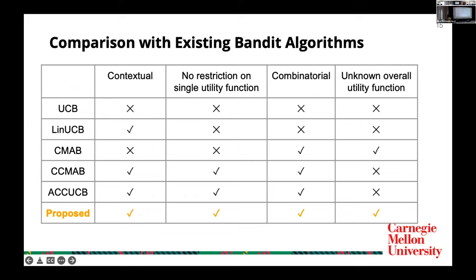However, existing bandit algorithms cannot deal with this problem. Some do not consider worker context, such as UCB and CMAB. Some do consider context but assume a fixed structure of the utility function — for example, LinUCB assumes a linear relationship. CCMAB and ACC-UCB do consider a contextual and combinatorial setting, but they assume the overall utility function is known, so they only need to learn the single utility of each worker and then refer to an oracle that can maximize the overall utility function to select multiple workers. However, as mentioned, the overall utility function can be unknown in general. To this end, we propose an algorithm called Neural MAB, which can deal with the limitations of existing bandit works.